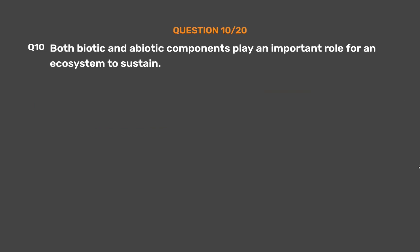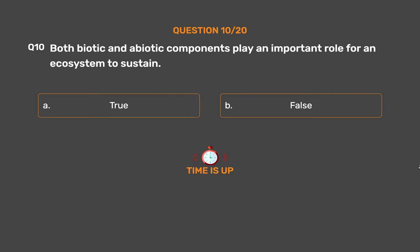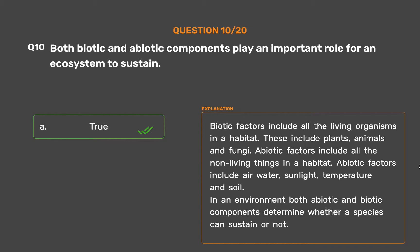Question 10. Both biotic and abiotic components play an important role for an ecosystem to sustain. Option A: True. Option B: False. The correct answer is Option A: True. Biotic factors include all the living organisms in a habitat — plants, animals and fungi. Abiotic factors include all the non-living things in a habitat, such as air, water, sunlight, temperature and soil. In an environment, both abiotic and biotic components determine whether a species can sustain or not.